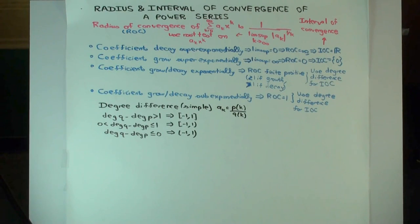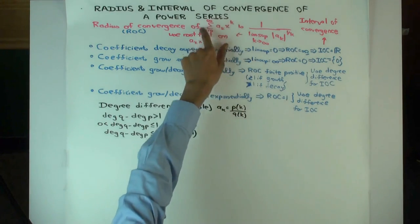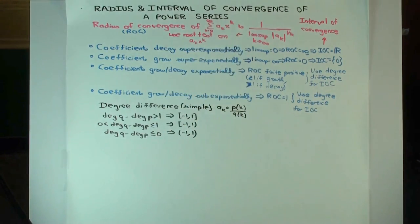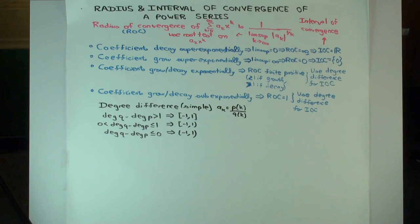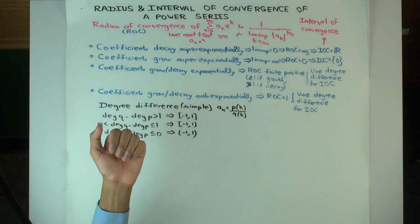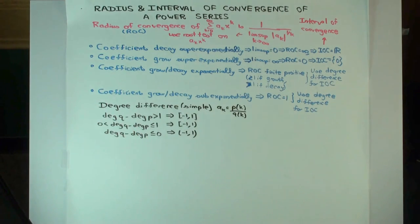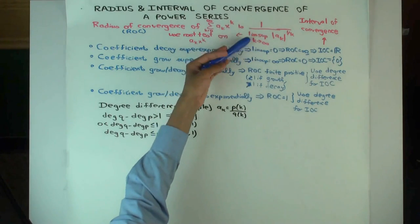In this talk we are going to consider part of the process for determining the radius and interval of convergence. In a previous talk we considered the case where the power series is summation a_k x to the k, and we considered a situation where the coefficients either grow or decay super exponentially. In that case the radius of convergence is infinity if the coefficients are decaying and zero if the coefficients are growing.